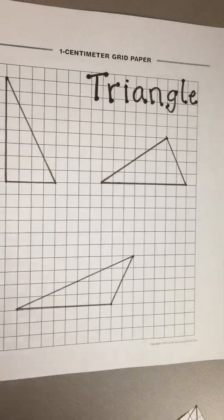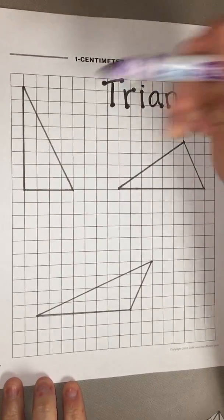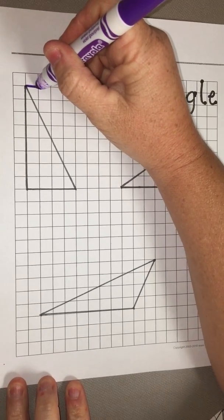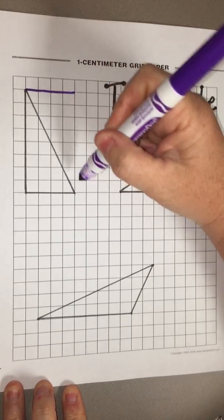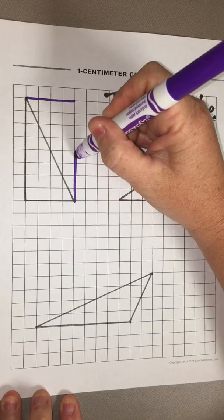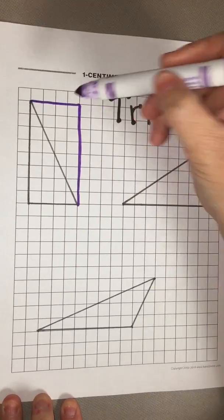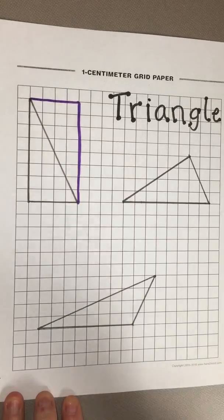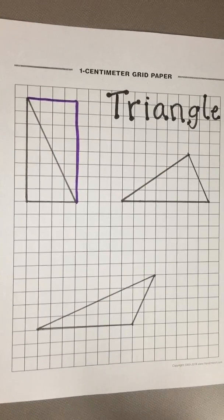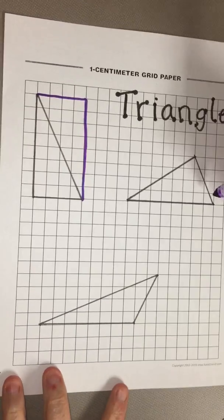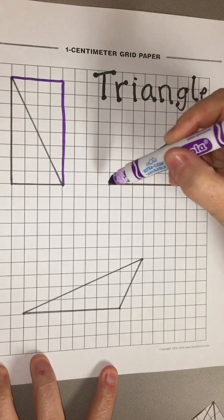So the first thing that we're gonna do is take our first triangle on your paper and I want you to draw a... we're gonna complete the rectangle here. You're gonna use the same height and same width as your bottom inside of your triangle. You're gonna create a rectangle and then we're gonna do that to all three of these because in just a minute we're gonna go ahead and cut these out.